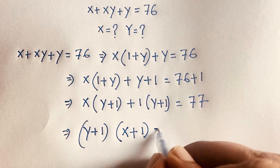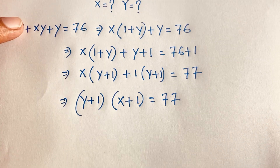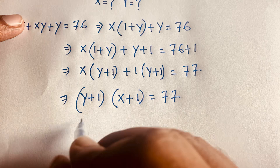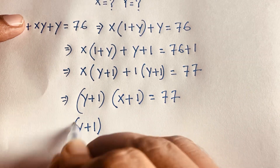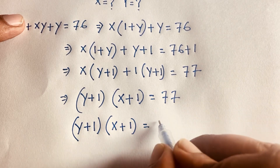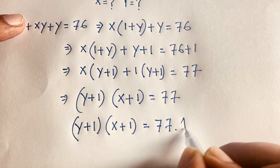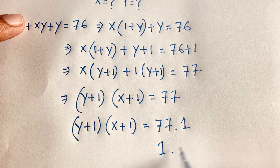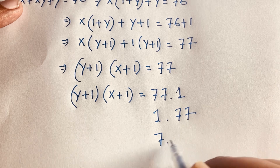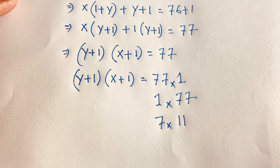Remember x and y are positive integers. So we find the factor pairs of 77. We have (y plus 1) times (x plus 1) equals 77. The factor pairs of 77 are: 1 times 77, 77 times 1, 7 times 11, and 11 times 7. So there are 4 cases.